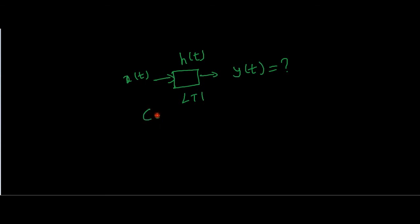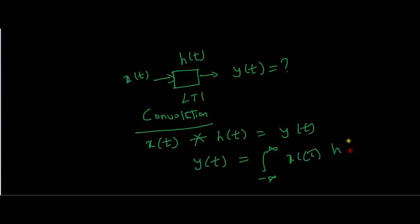There is method called convolution. What this method says is, if we convolve our input with impulse response, it provides the output. We denote convolution by this sign. For continuous signal, convolution is denoted in this way. This is integral from minus infinity to infinity: X of tau, H of t minus tau, d tau.